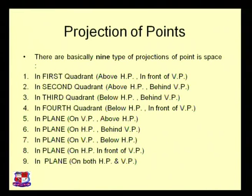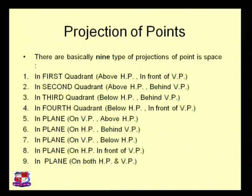There are basically nine types of projections of a point. One would be above HP and in front of VP; one would be above HP and behind VP; one would be below HP and behind VP; another can be below HP but in front of VP; next can be on VP but above HP; and the sixth one can be on VP and above HP in other configurations.